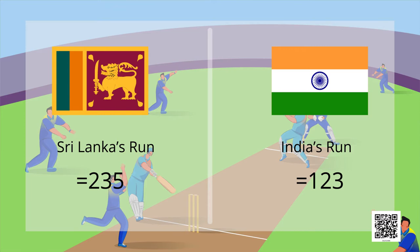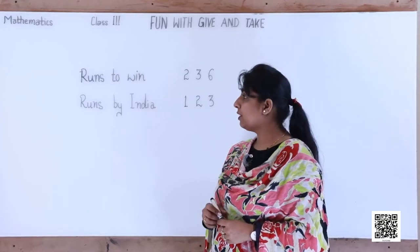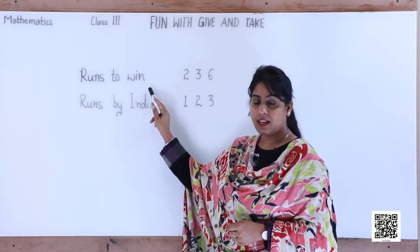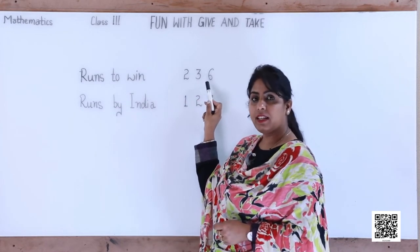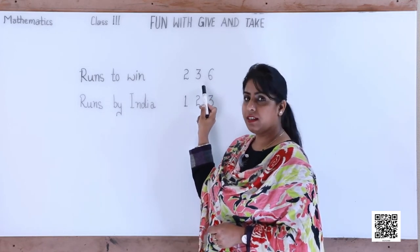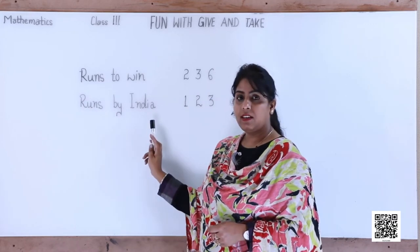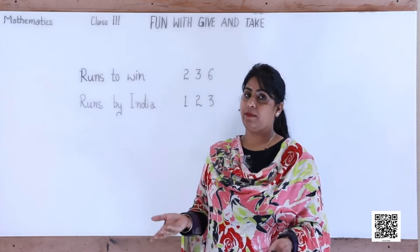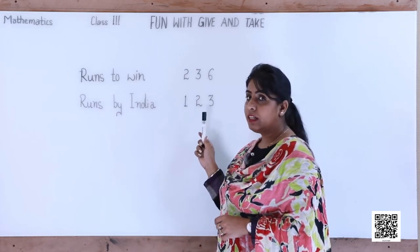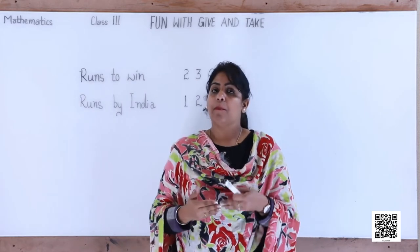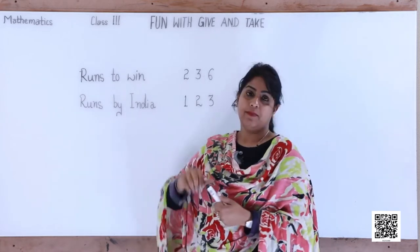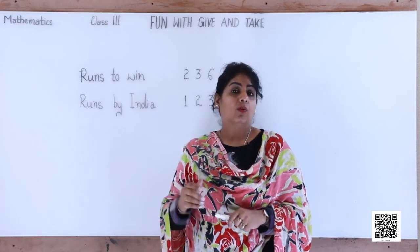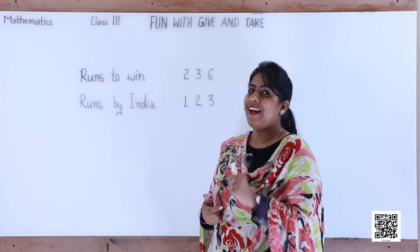How many more runs does India need to win? To win, India needs more than 100 runs or less than 100 runs? For this we need to think. The total runs that India needs to win are 236. The runs that India has already made are 123. So how many more runs are required by the Indian team to win?